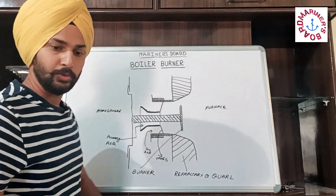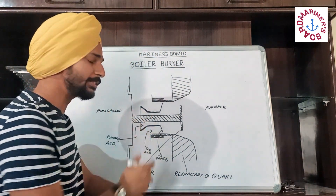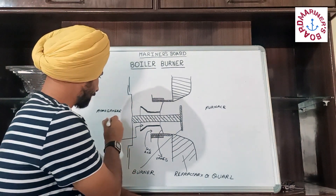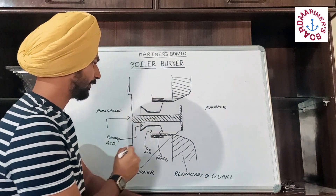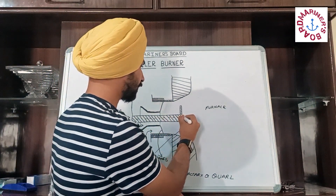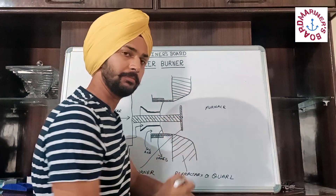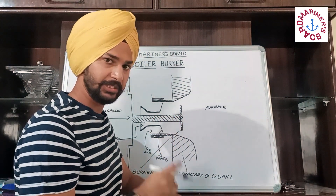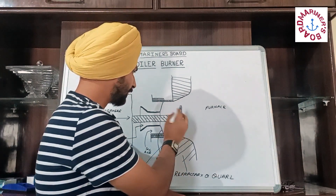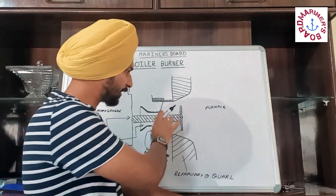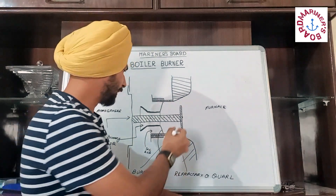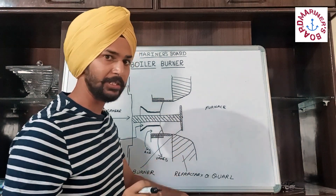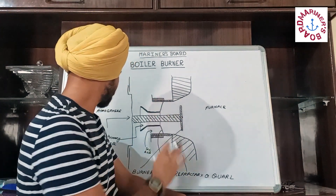The fuel coming inside the boiler burner arrives at the tip of the burner. From here the primary air will come and get mixed with the fuel. This burner could be of any type — let's suppose it is a rotary cup burner. The fuel comes inside and the primary air comes in, and the work of the primary air is to atomize the fuel.